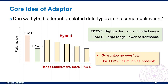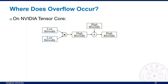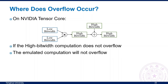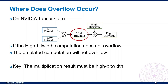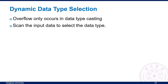There are two major issues: guaranteeing no overflow occurs, and using FP32F as much as possible. To solve this, we need to understand where overflow occurs. On Tensor Core, the input is low bit-width data types but the immediate result is high bit-width. So if the original high bit-width computation does not overflow, the emulated computation will not overflow either — overflow only occurs in data type conversion. This feature is guaranteed by hardware; the key is that the multiplication result must be high bit-width. Many DSAs such as Tensor Core and Huawei Ascend support this feature.